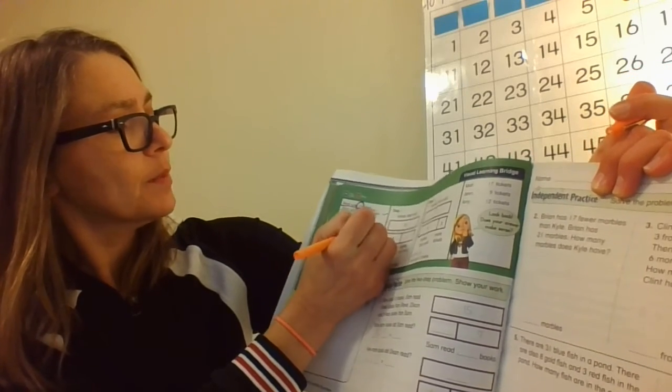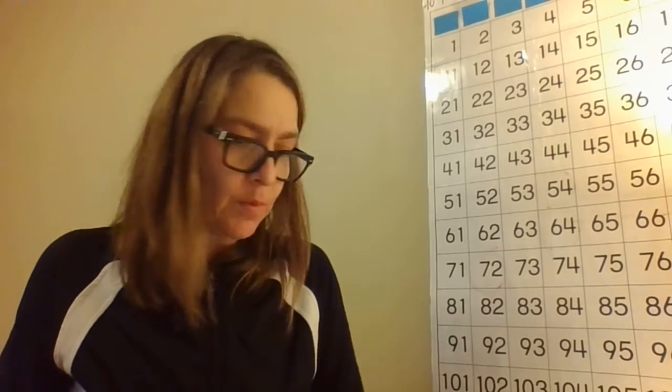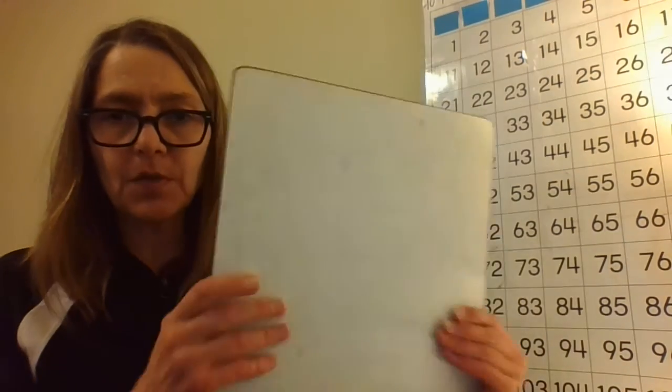I'm going to circle the number 3 and write a plus sign. The last part is what they're asking me to find — how many tickets did each person sell. That takes me to my whiteboard, and you can get your whiteboard and marker as well.